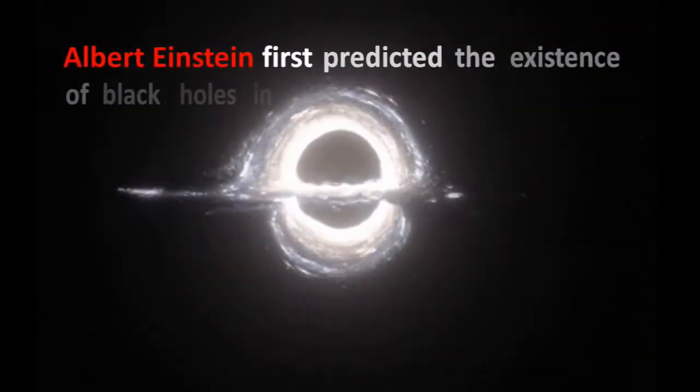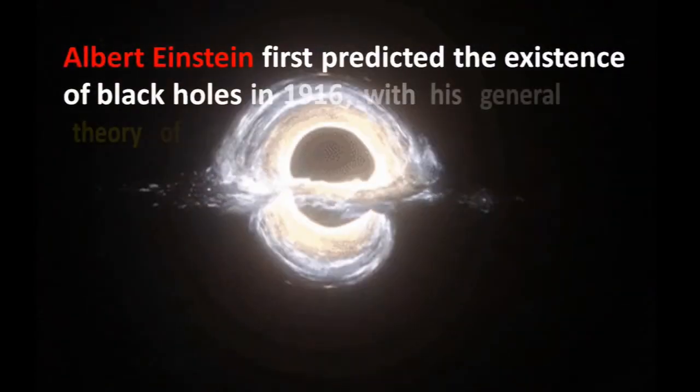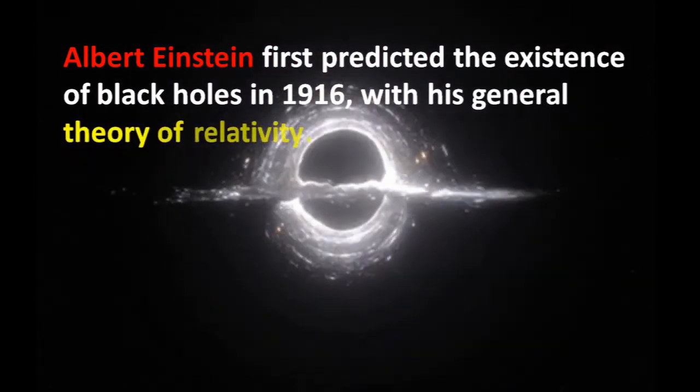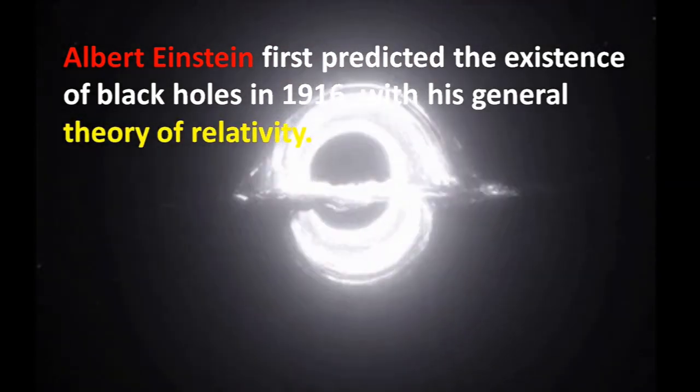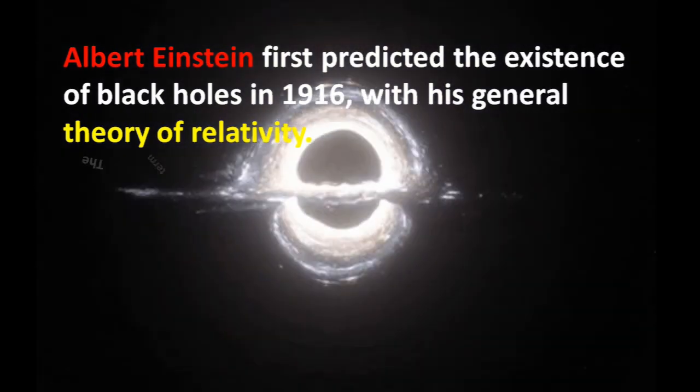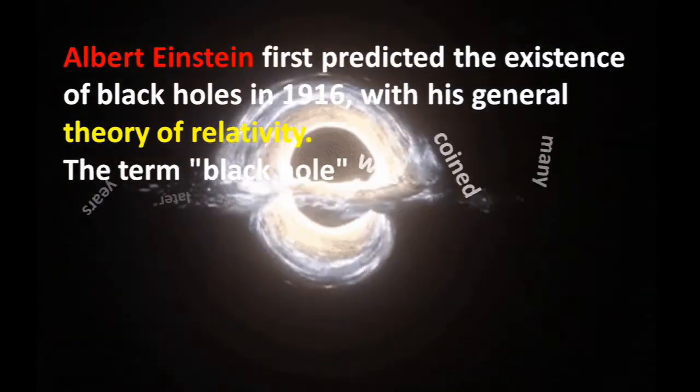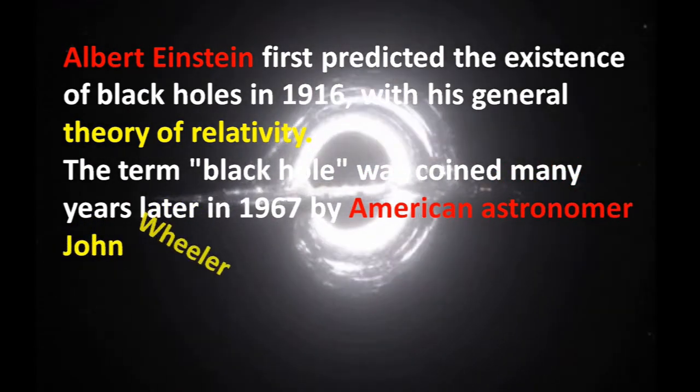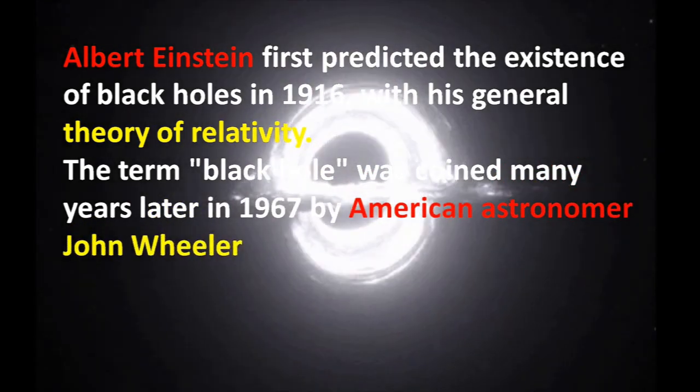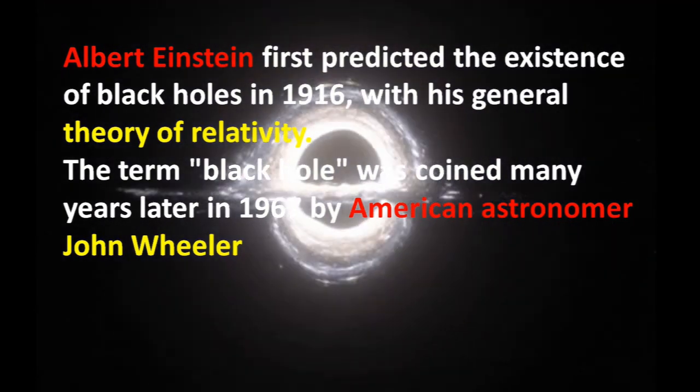Albert Einstein first predicted the existence of black holes in 1916 with his general theory of relativity. The term 'black hole' was coined many years later in 1967 by American astronomer John Wheeler.